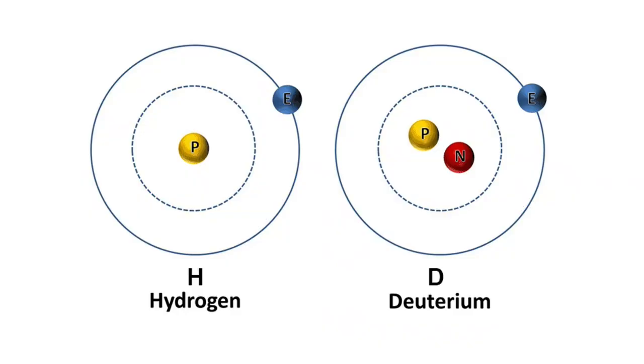To quickly recap: what is deuterium? It's a naturally occurring isotope of hydrogen. It's different from hydrogen because it has a neutron — hydrogen only has a proton and an electron. It has different magnetic properties, is a different size, and has a different effect on water with respect to hydrogen bonds. Anywhere there's a hydrogen in biology — in a vitamin, receptor, or hormone — having deuterium instead of hydrogen changes how that receptor or enzyme functions.